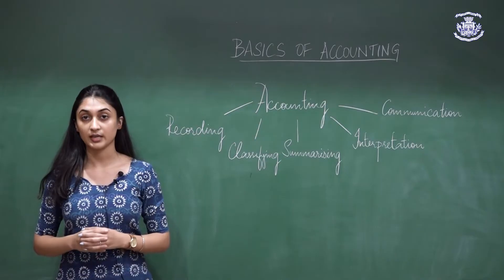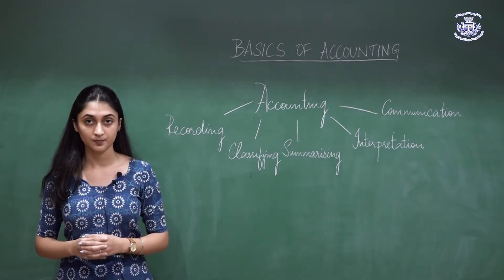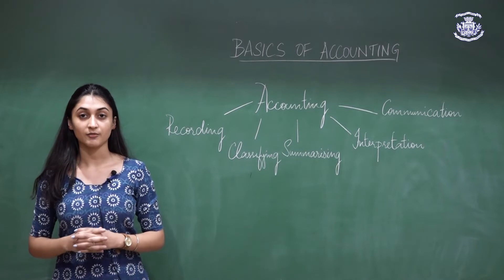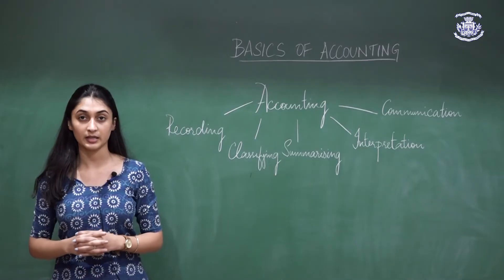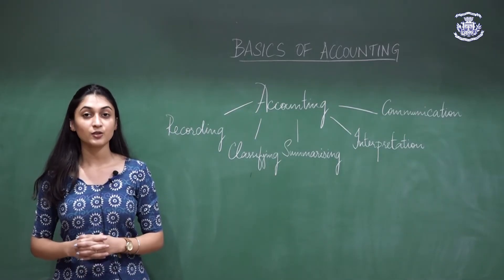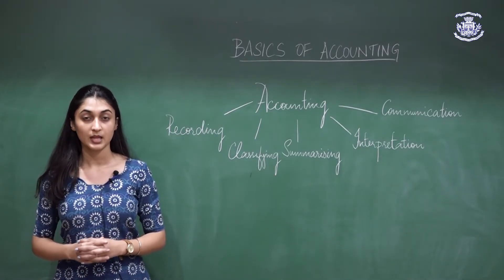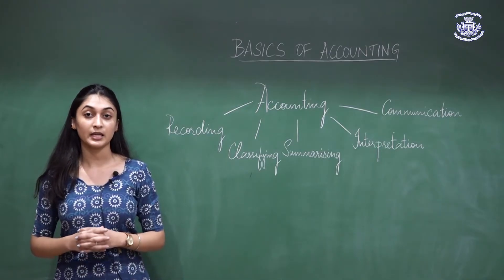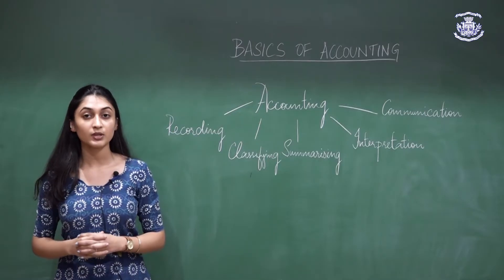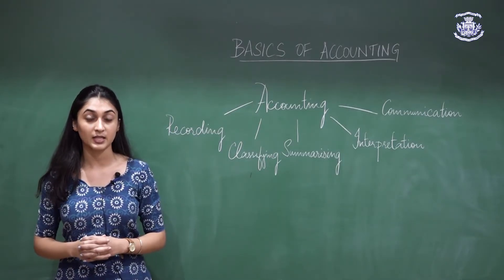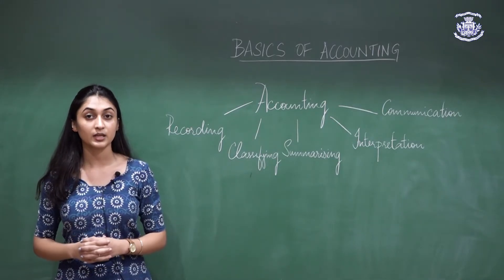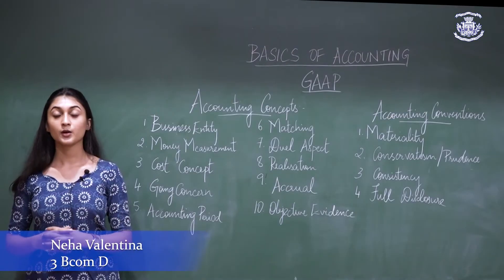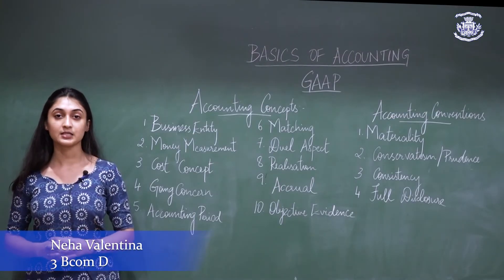However, accounting has a few drawbacks. Items of non-monetary nature cannot be recorded in the books of accounts. Fixed assets are valued at the original cost according to the traditional approach, which may not be realistic. The value of money is not stable, and therefore the accounting values may be inaccurate. Accounting values are based on estimates, which may be inaccurate. Finally, accounting can be manipulative or biased.